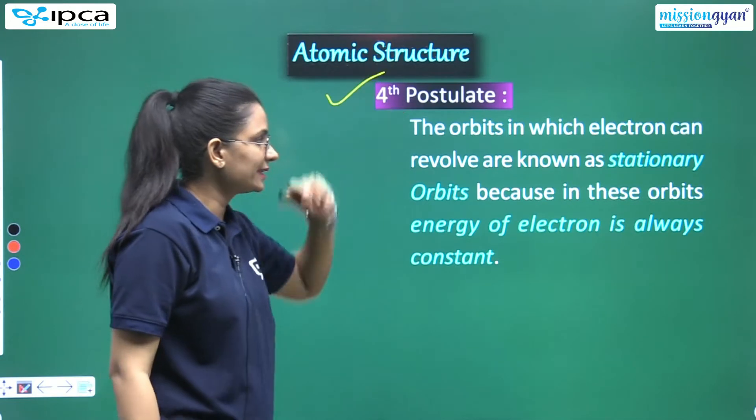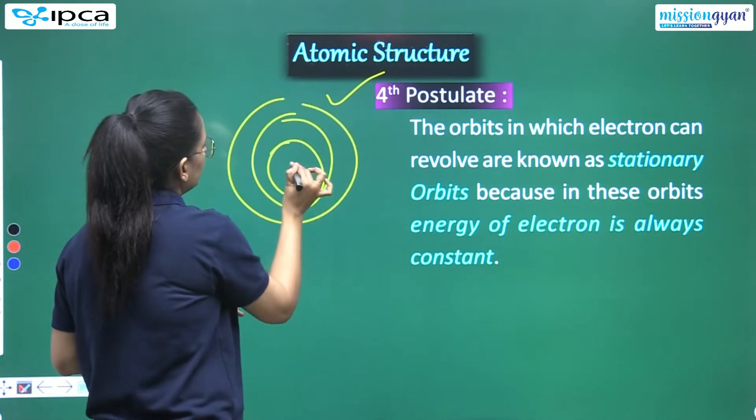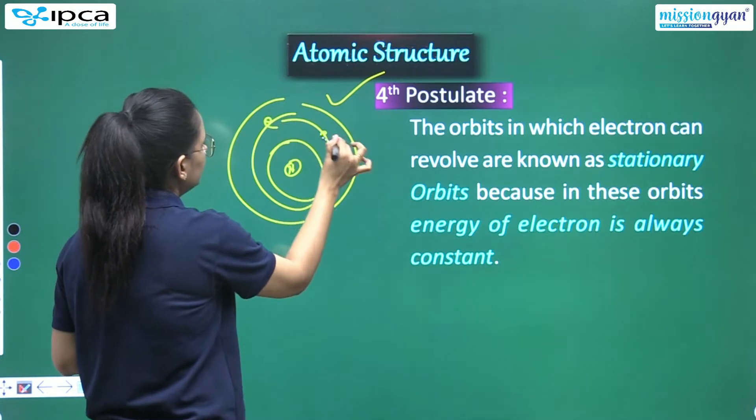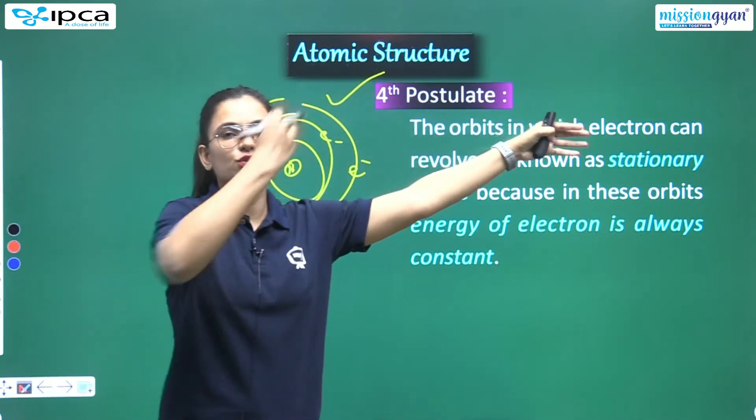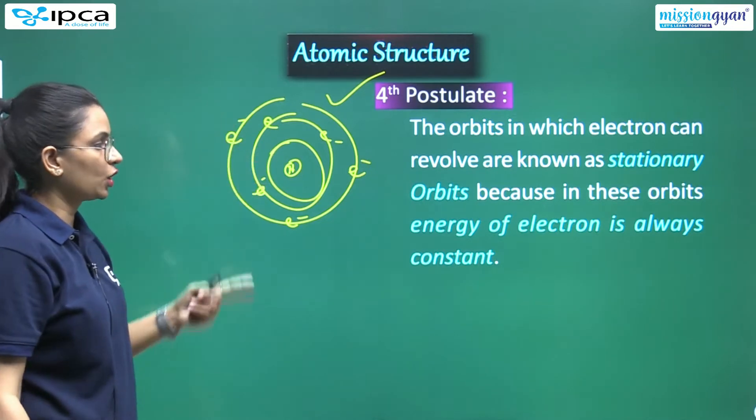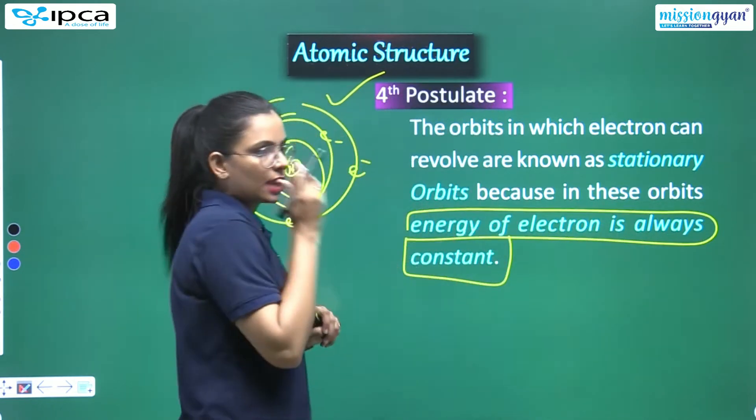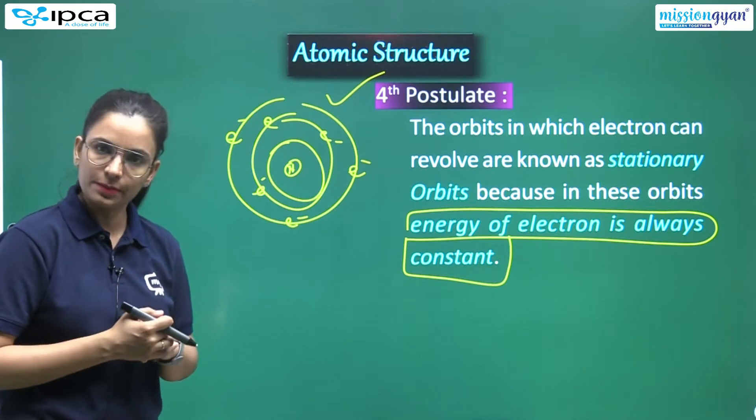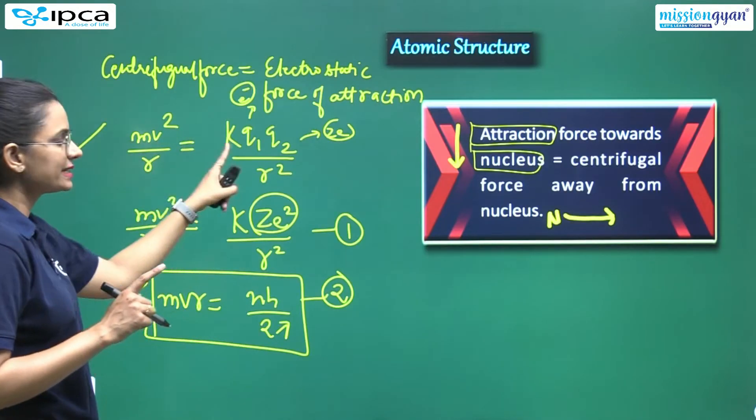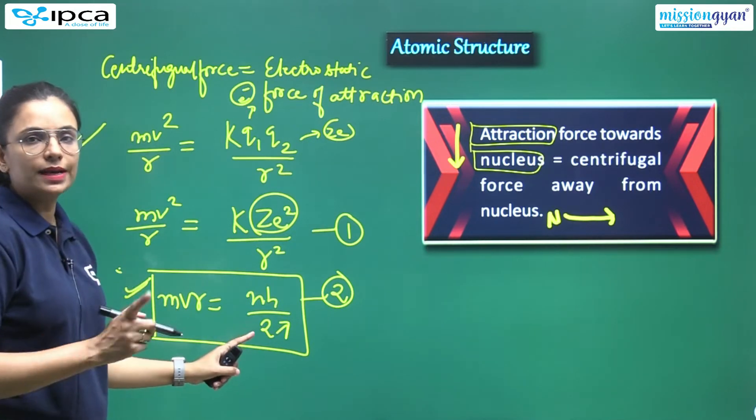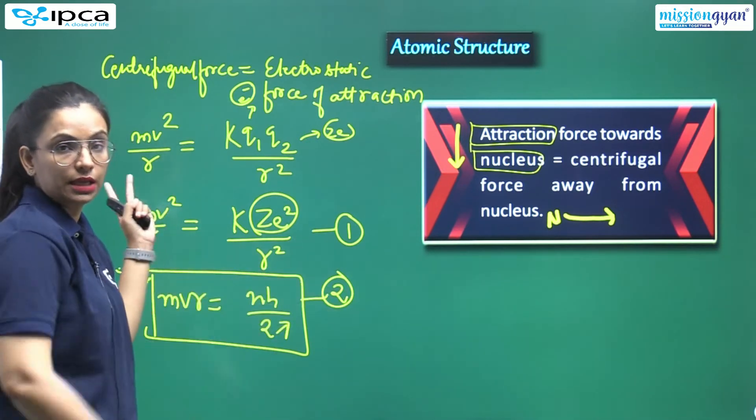Fourth postulate - what does it say? The orbits in which electrons can revolve are known as stationary orbits. In these orbits electrons revolve. So it says that these orbits are stationary orbits. Not that from here they go there, from there they go here. No. In a fixed position they are rotating, because in these orbits, energy of electrons is always constant. The reason is that here energy remains always constant. And radii also remain constant.